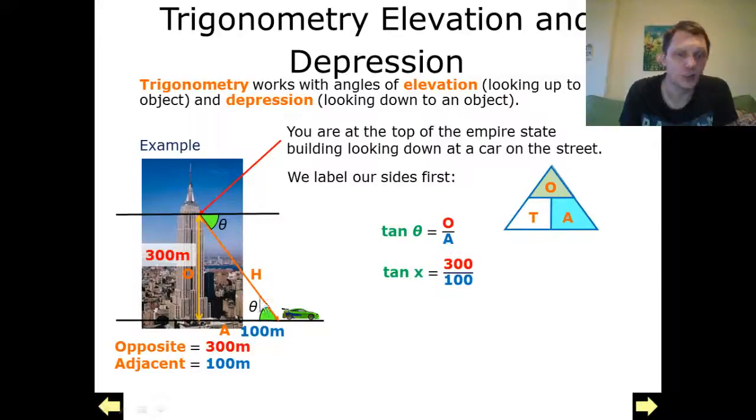So tan x—I've called this angle x because that's a normal thing in maths. Anytime you're solving an unknown, we say this is x. So tan x equals 300 over 100.